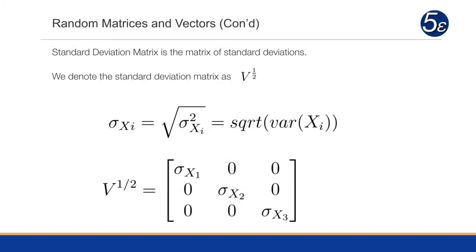The standard deviation matrix is a matrix of the standard deviations, denoted as V to the one-half. Remember that the standard deviation of a single variable is the square root of the variance. In our standard deviation matrix V^(1/2), all entries are zero except the diagonals, and the diagonal will be the square root of the individual variances, giving us our matrix of standard deviations.